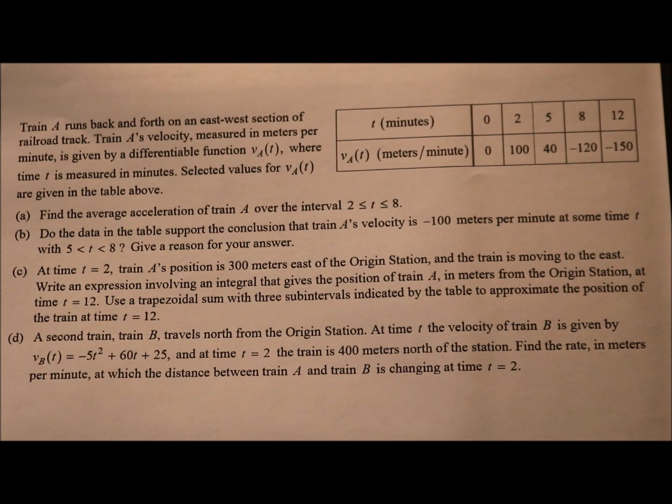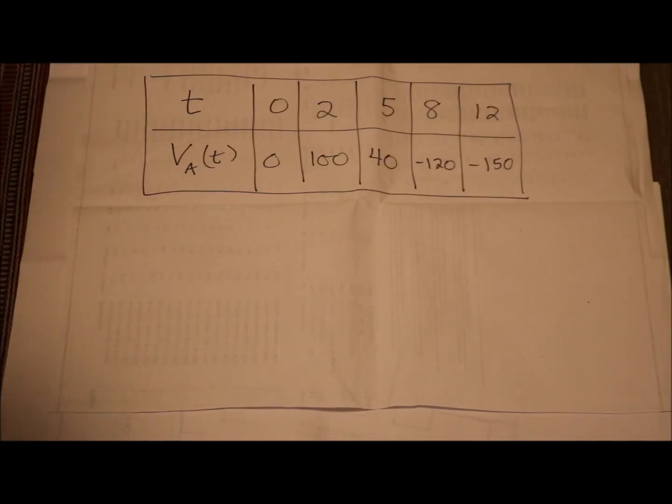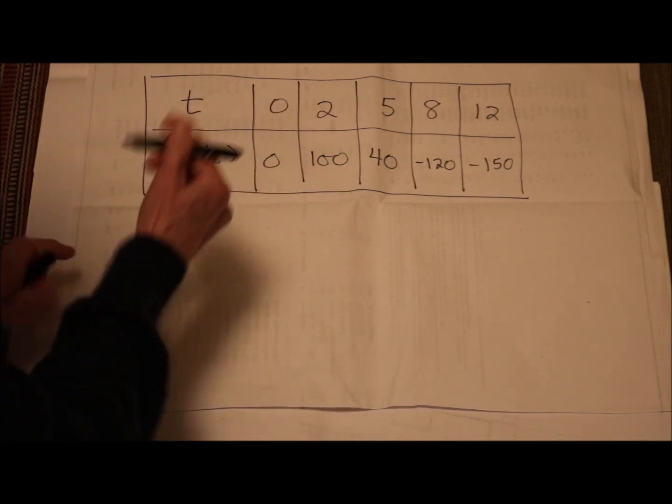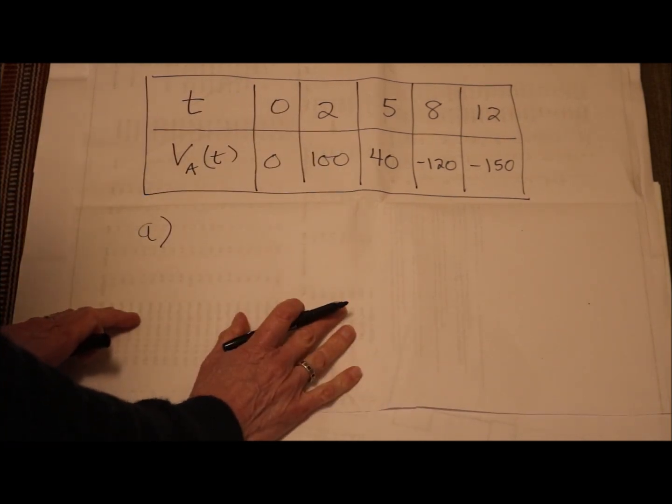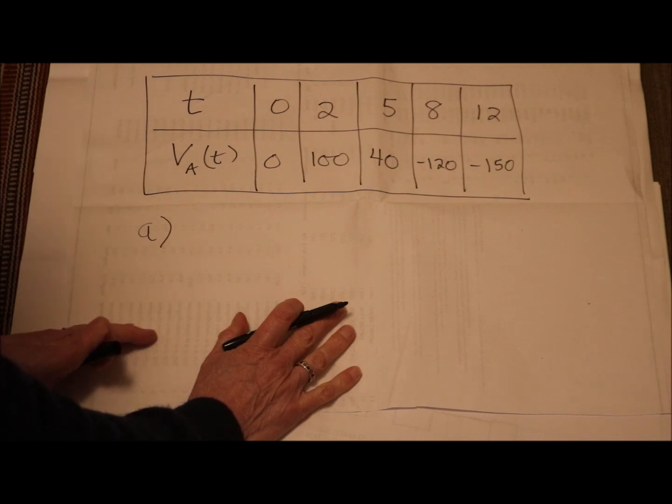Part a, find the average acceleration of train A over the interval 2 is less than or equal to t, which is less than or equal to 8. Let's start with a. Find the average acceleration of train A. Average acceleration means change of y over change of x. That means slope. Nothing to do with the derivative.